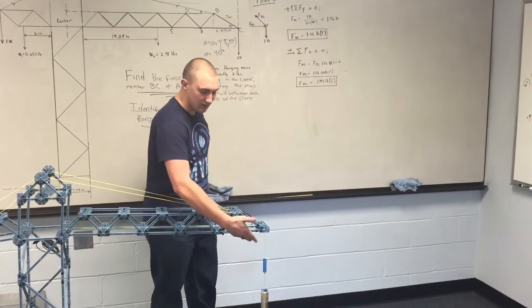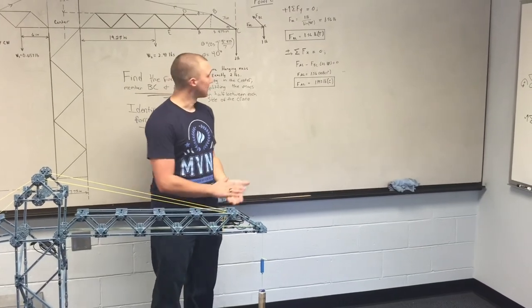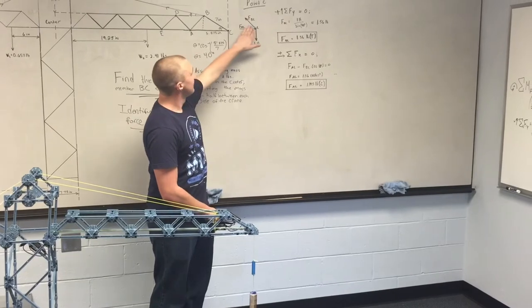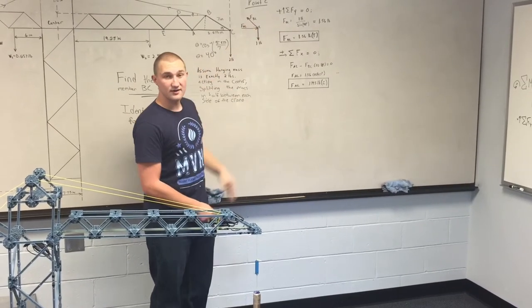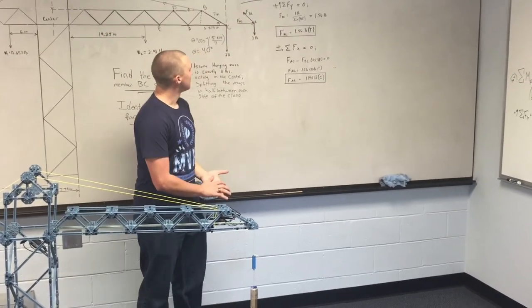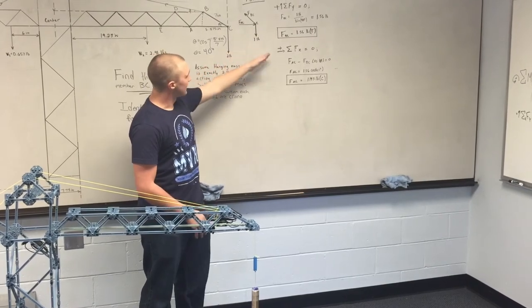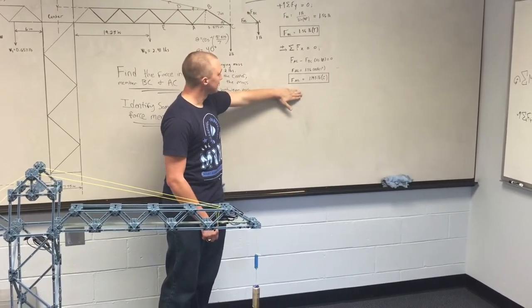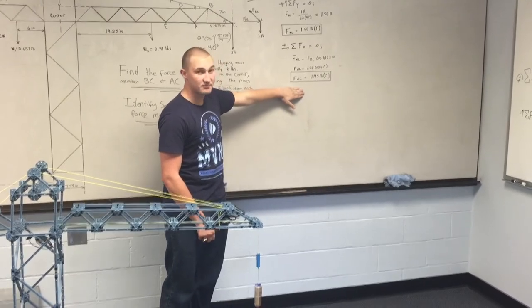So using trigonometry, we can find the horizontal component of FBC, and we can also just sum up these forces and solve for FAC being 1.195 pounds.